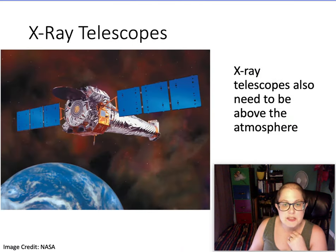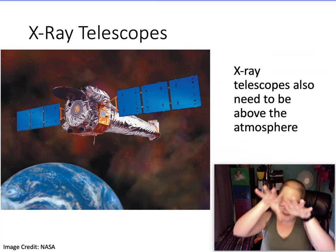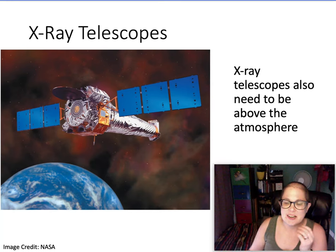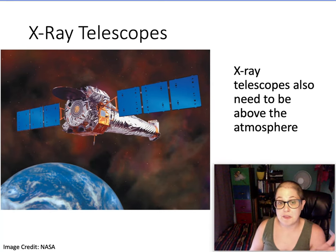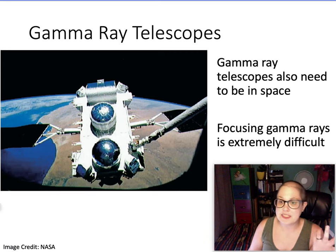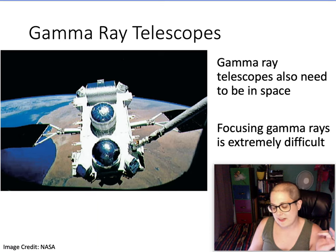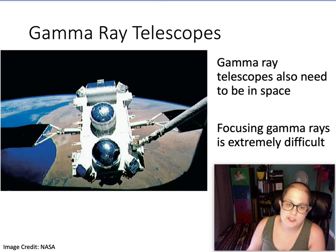X-ray telescopes look somewhat like a normal telescope from the outside, but x-rays have so much energy that the mirrors are around the side — the light bounces around inside. An x-ray telescope must be above the atmosphere. This is a drawing of the Chandra space telescope. Gamma ray telescopes don't look anything like a telescope either because these are the highest energy types of light — focusing them is really difficult, so you can't always get a precise location on the sky. Gamma ray telescopes also need to be in space; it's great for us because gamma rays, x-rays, and ultraviolet light are bad for life forms — they can destroy cells and molecules.